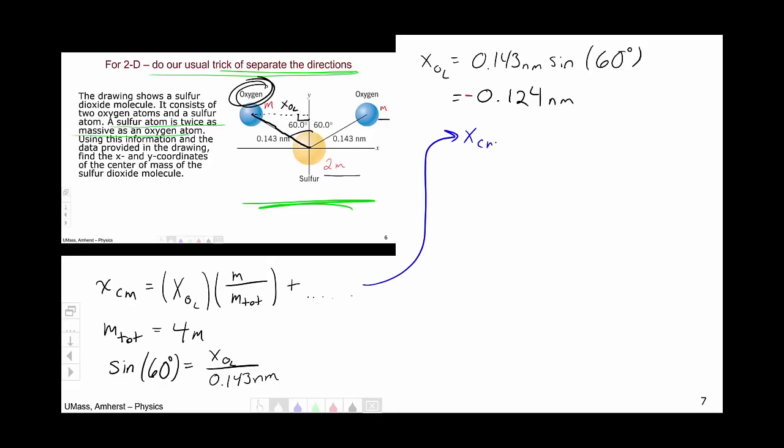So now returning to my center of mass calculation, we've got the x center of mass, the value we've now calculated as negative 0.124 nanometers. And the weight is going to be the mass of the oxygen atom, which we call m, divided by 4m, and we see that the m's cancel.